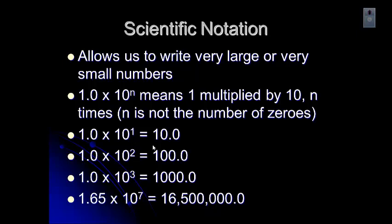1 times 10 to the n actually means 1 times 10 n times. N is not necessarily the number of zeros. So if you look at these examples on the screen, 1.0 times 10 to the 1, 10 to the 1 is 10, so 1 times 10 is 10.